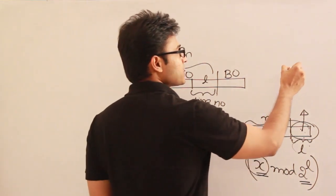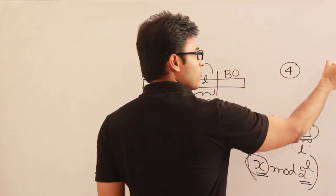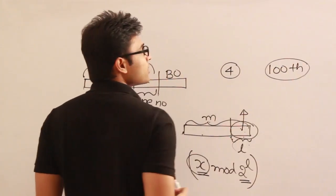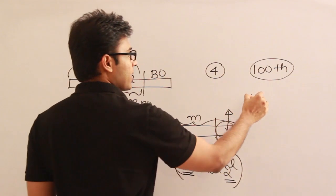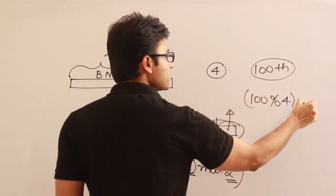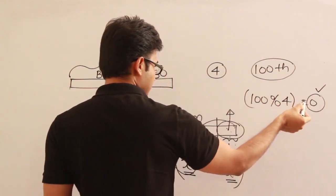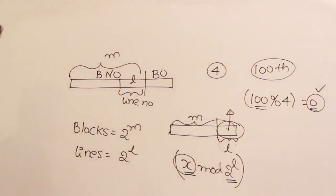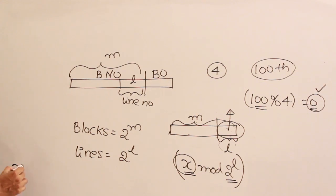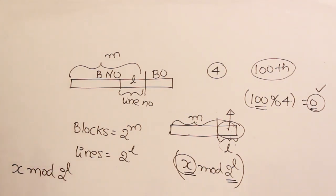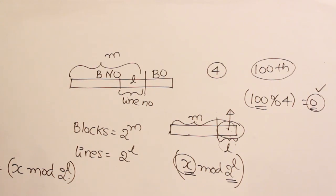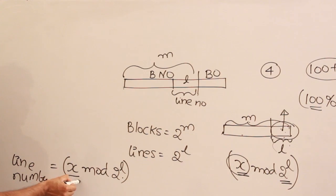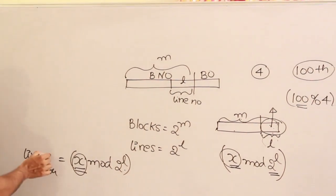For example, if the number of cache lines is 4 and I ask where the 100th main memory block will be placed, take 100 mod 4, which gives 0. So the 100th block will be present in the 0th line of the cache. Simply put, for any x-th block of main memory, the cache line it occupies is x mod 2 power l, where 2 power l is the number of lines in the cache.